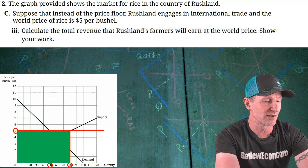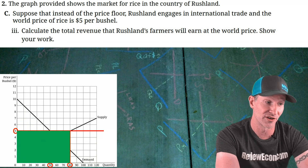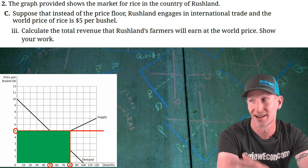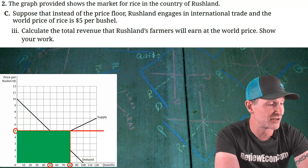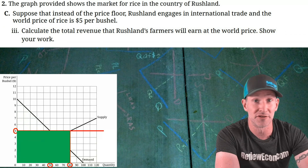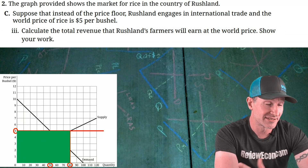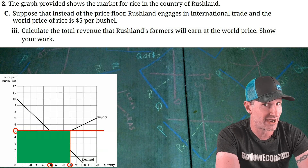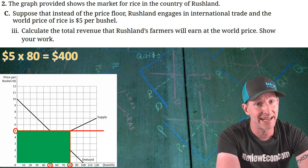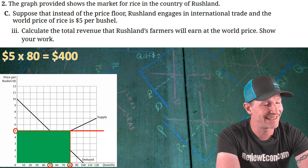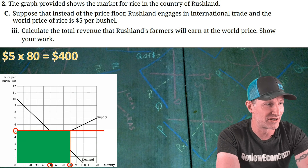For part C triple I, we calculate total revenue that Rushland's farmers earn at the world price. Total revenue is price times quantity — domestic producers are producing 80 units and selling at $5 each. So $5 × 80 = $400 worth of total revenue for these farmers.